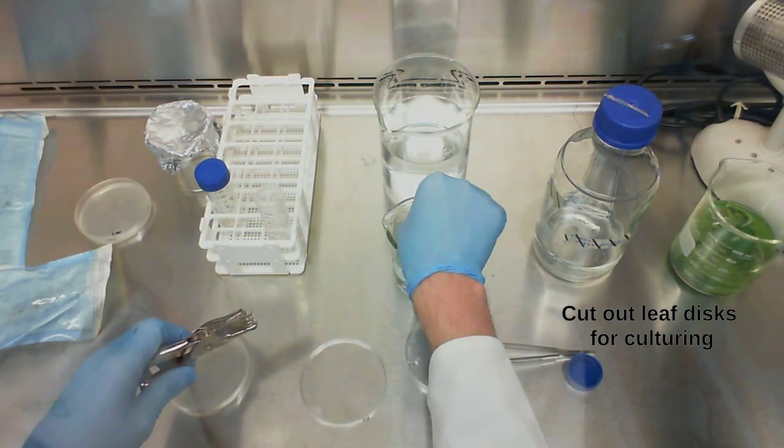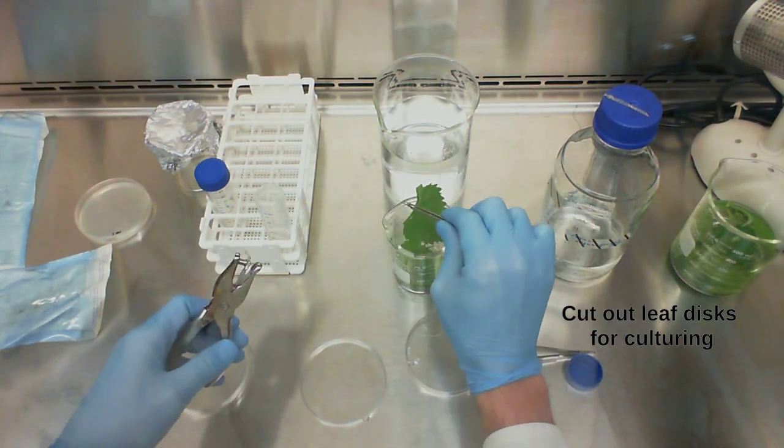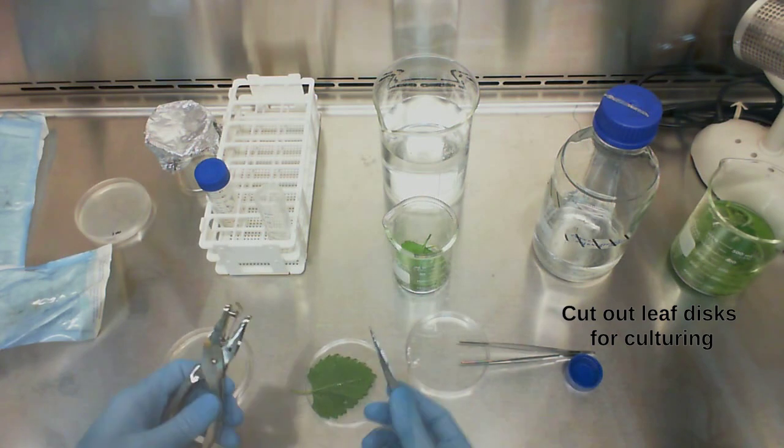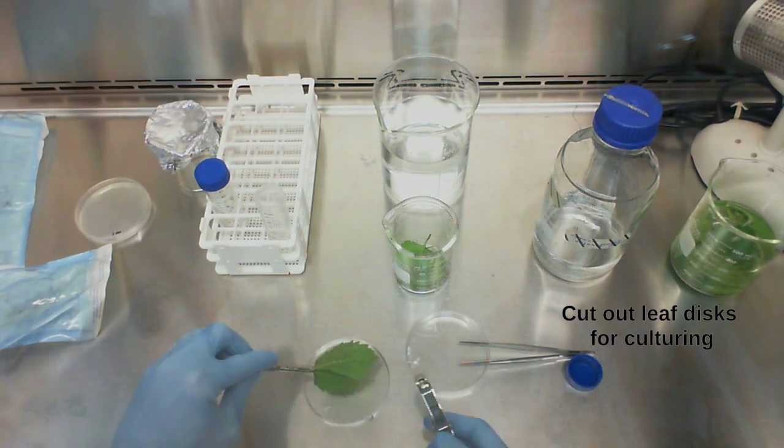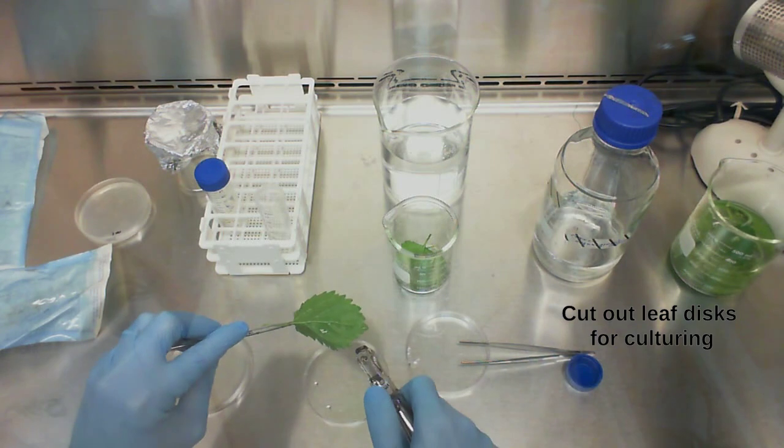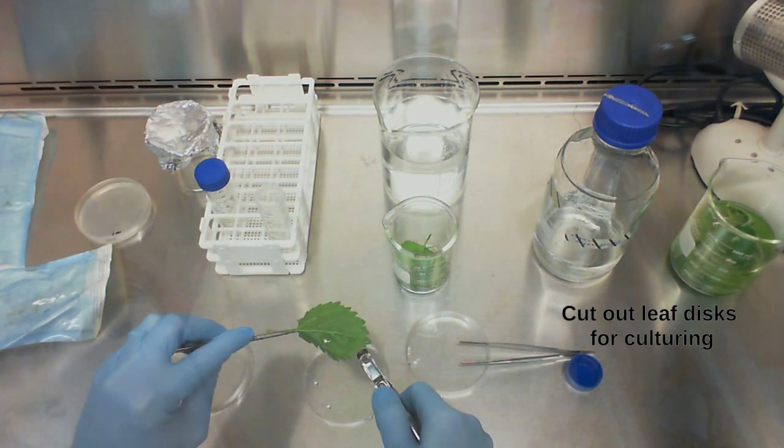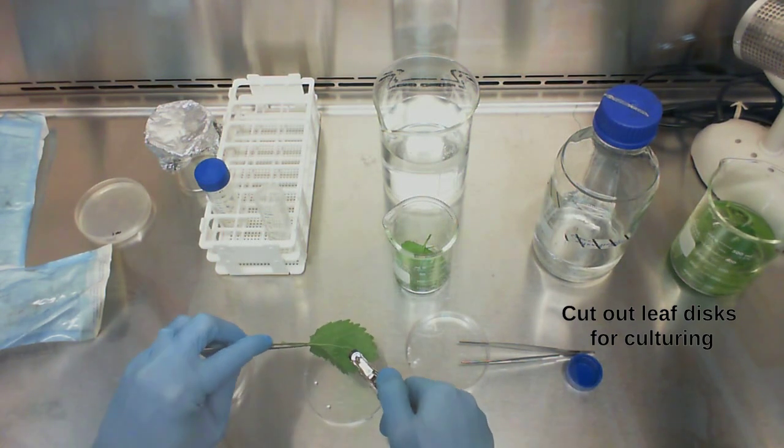I'm going to take one of my leaves. When you are trying to generate calluses, what you want to do with a leaf is try to make a hole or make a cut that's going to incorporate one of the veins.